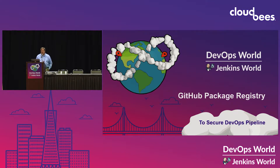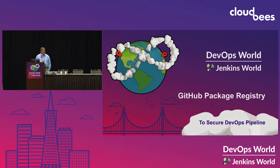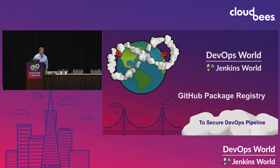This particular talk is about GitHub Package Registry, but I'm going to do it against a backdrop of GitHub's new release. As of the 8th of August, we released Actions for CI/CD pipelines, so the most effective way to implement the package registry will be through Actions.